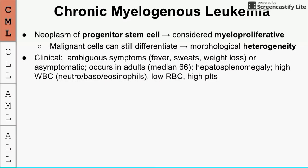Somebody with CML will usually have ambiguous symptoms — fevers, sweats, weight loss — or even be asymptomatic; about 40% of patients are asymptomatic. It's a disease of adults with a median age of 66. We often see large livers and large spleens due to extramedullary production of blood cells. Lab findings include high white count (specifically granulated white blood cells — high neutrophils, basophils, and eosinophils), low red blood cells, and high platelets. High platelets is unique to CML among the four leukemias.